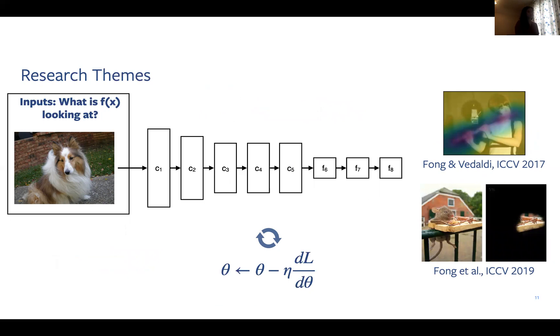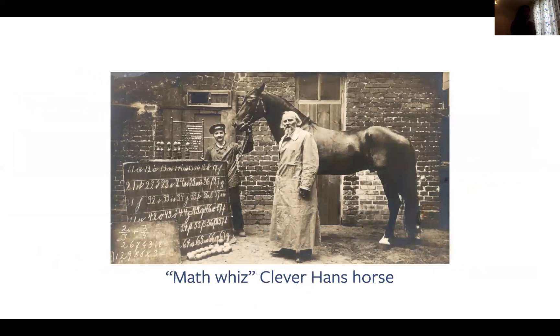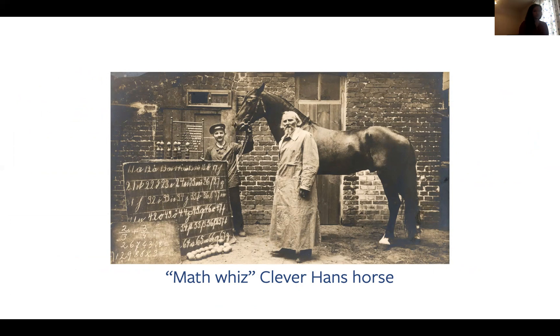So now let's zoom in on that first research theme that asks the question, what is a model looking at? To motivate this, let me tell you a story about a German horse named Hans in the 1900s. This horse was considered a math whiz because it was able to answer arithmetic questions by tapping out the answers to questions. However, it wasn't actually computing mathematical calculations. Rather, it was reading its trainer's body language, which revealed when it was close to the answer. Similarly, we want to ensure that deep networks aren't relying on some cheating signal such that they perform well on the training data set, but can't generalize to real-world situations that lack that signal. We want to ensure that they are learning the right relationship between inputs and outputs, and not spurious correlations.